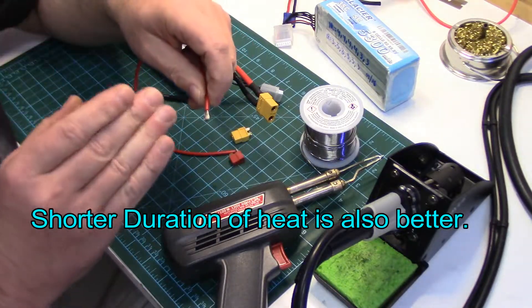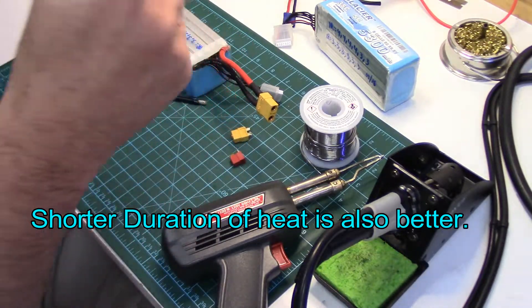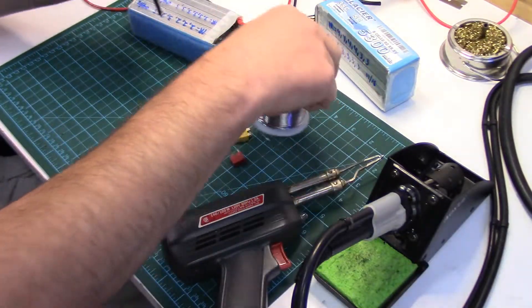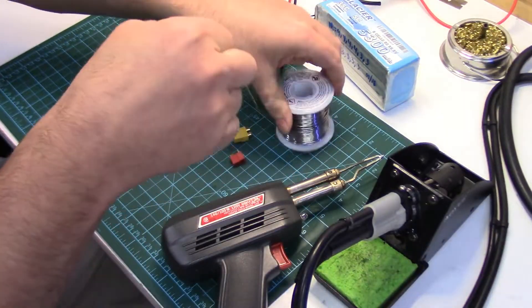So the less amount of heat you can apply to a connector as you're soldering the wire onto it, the better. And again, tinning so important. We're just going to do some examples here of tinning. I'm going to do a really poor tinning job first so you can get an idea of what that's all about.